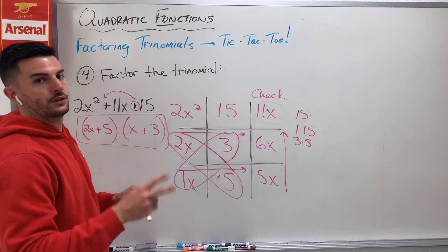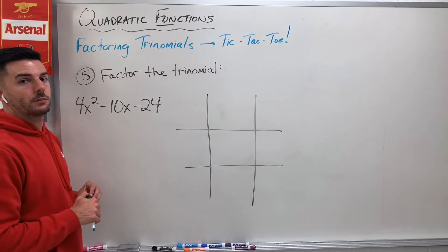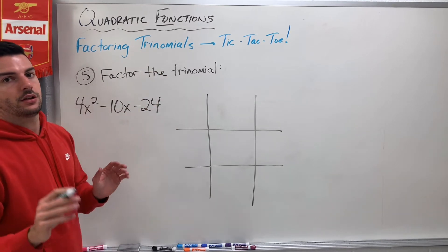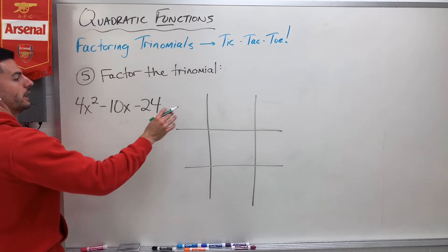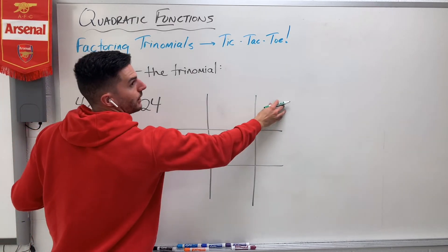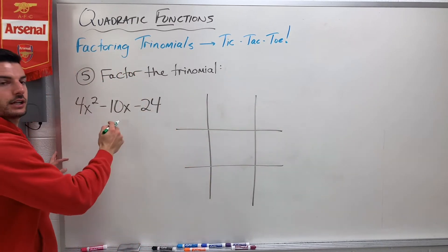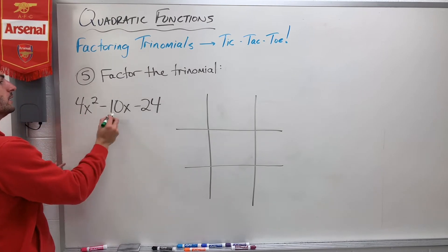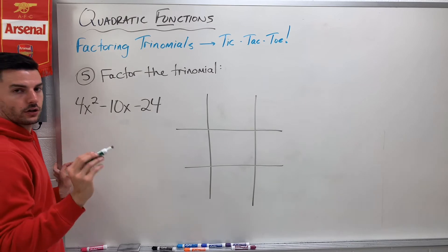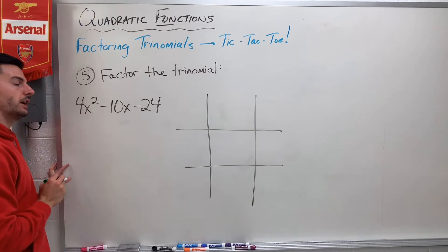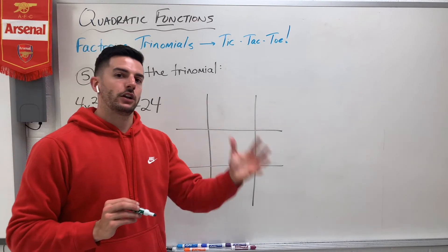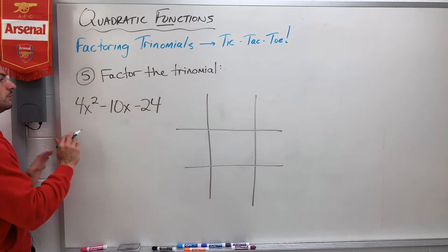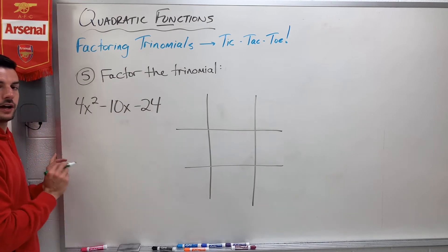Good times. I'm going to do 2 more and then we are all done. Number 5, moving on up. Factor the trinomial here. Normally we start by writing all my terms across the top of my tic-tac-toe box, but look at this — do you notice something about your coefficients? 4, 10, 24 — they are all even numbers. All even numbers have a common factor of 2.